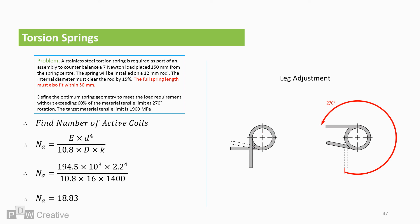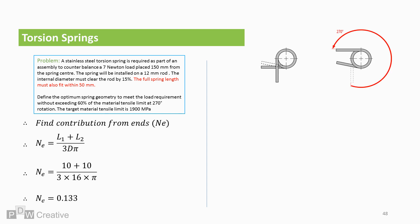We have 18.83 coils. Importantly, we have 0.83 of a full turn. So, we need to redraw one of the arms to account for this, as the previous image portrayed 0.75 of a turn. We don't need to know the number of coil turns associated with the ends, but let's just go over it. Any contribution from the ends is length of arm 1 plus arm 2 over 3 times mean diameter times π and this gives us 0.133.